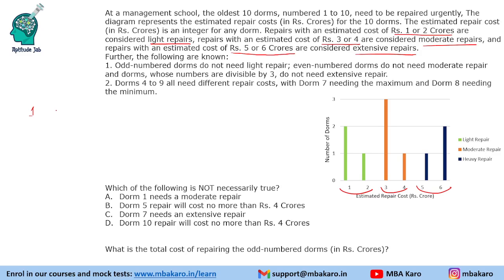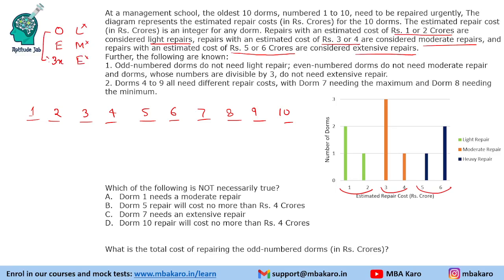Let us make a table for DOMs 1 to 10 and fill in the repair costs. By the first condition, odd numbers do not need light repair, even numbers do not need moderate repair, and multiples of 3 do not need extensive repair. So for DOMs 3 and 9, which are both multiples of 3 and odd, they will need moderate repair. For DOM 6, which is a multiple of 3 and even, it will not need moderate or extensive repair, so it will need light repair.